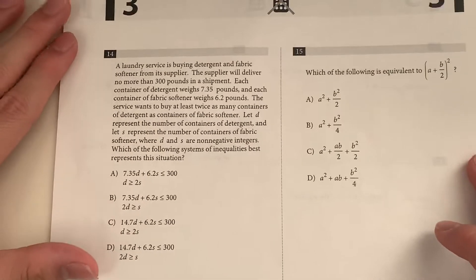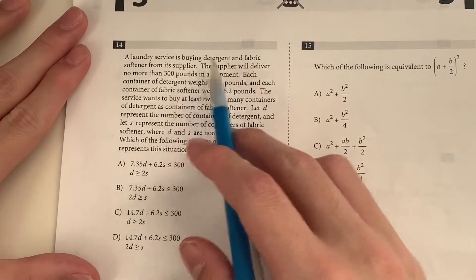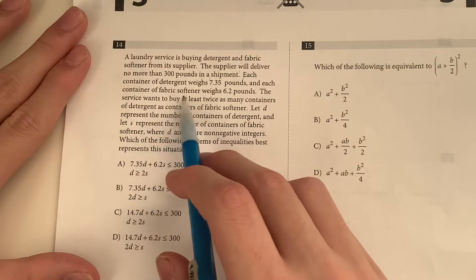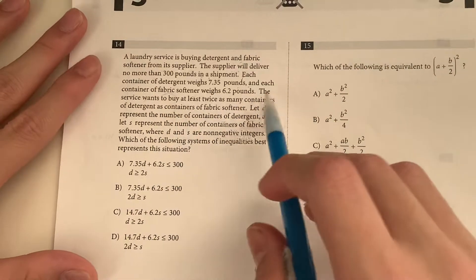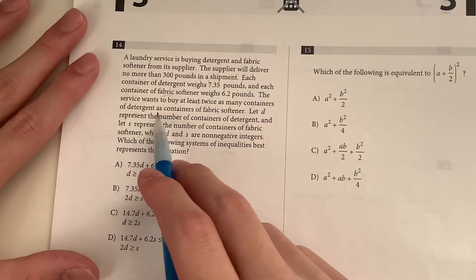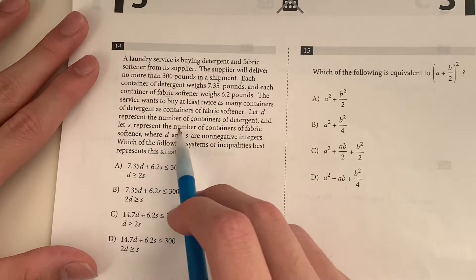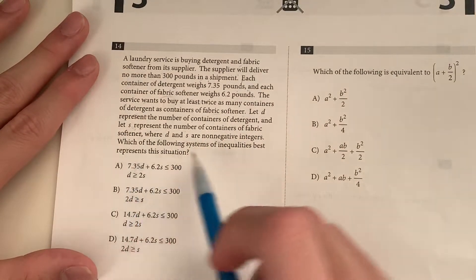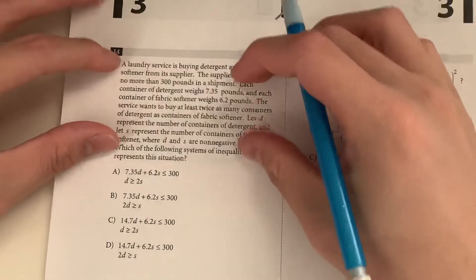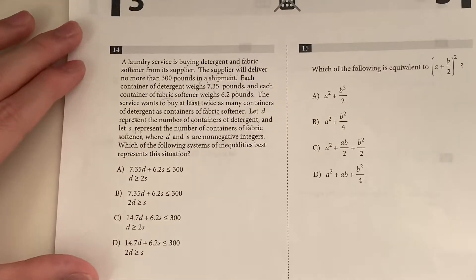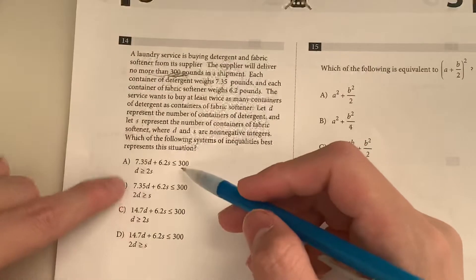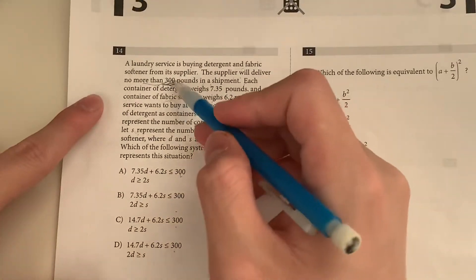Okay, moving on to our last two questions in the multiple choice section. A laundry service is buying detergent and fabric softener from a supplier. The supplier will deliver no more than 300 pounds in a shipment. Each container of detergent weighs 7.35 pounds, and each container of fabric softener weighs 6.2 pounds. The service wants to buy at least twice as many containers of detergent as containers of fabric softener. Let D represent the number of containers of detergent, and S represent the number of containers of fabric softener, where D and S are non-negative integers. Which of the following systems of equations best represents the situation? Okay, that was a very lengthy piece of information. So let's do it. Okay, we need it to be no more than 300 pounds. So looking at your answer choices, all of them, as you can see, are no less than 300, so satisfies this condition.